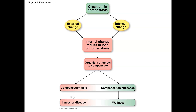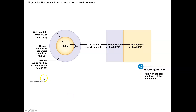Before we can get deeper into the understanding of homeostasis, it's important to understand the body's internal environment. In anatomy, you really look at what's called the extracellular fluid and the intracellular fluid. Looking at this diagram, you can tell that there's actually less extracellular fluid than intracellular fluid — approximately 66% intracellular fluid and about 33% extracellular fluid. Intracellular means the fluid inside of the cells.